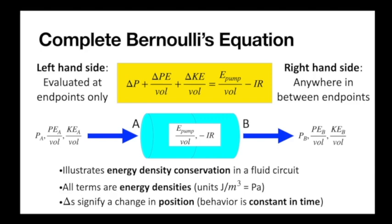All five terms have units of energy density — joules per volume of fluid — and it's carried throughout the circuit by a current tracked as a flow rate or volume per time. So we're tracking fluid that has some associated energy density as it flows through a circuit and comparing it at two different points.